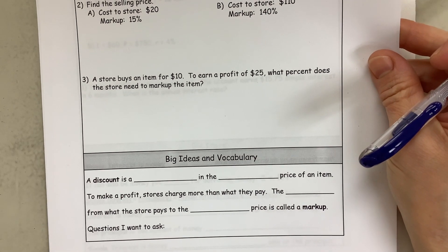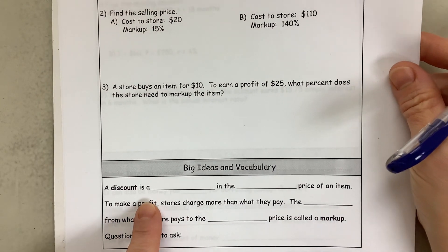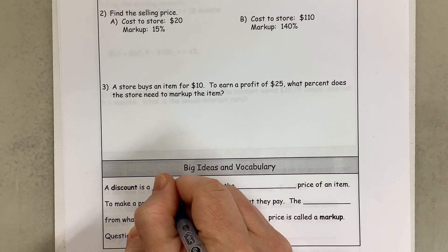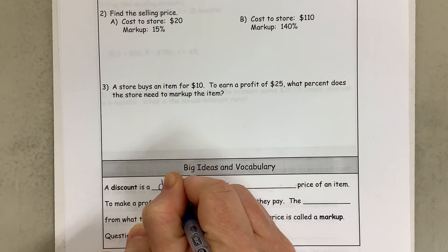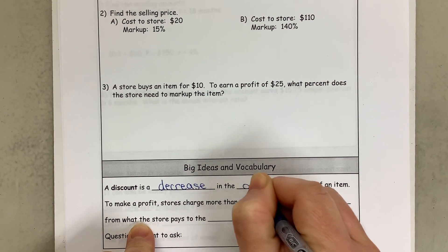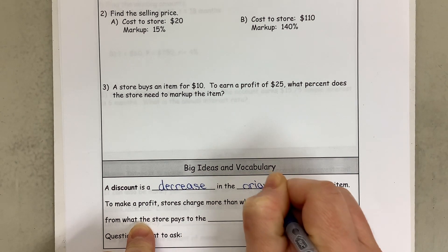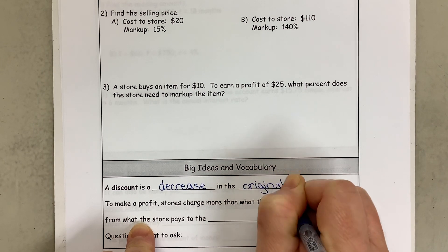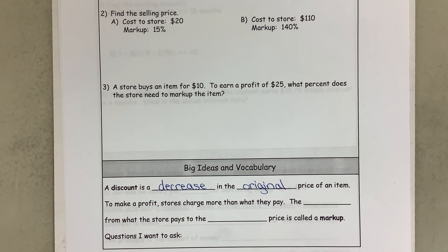So a discount is a decrease in the original price of an item. Okay, we like discounts. Black Friday, big discounts, right? Everybody shops then.